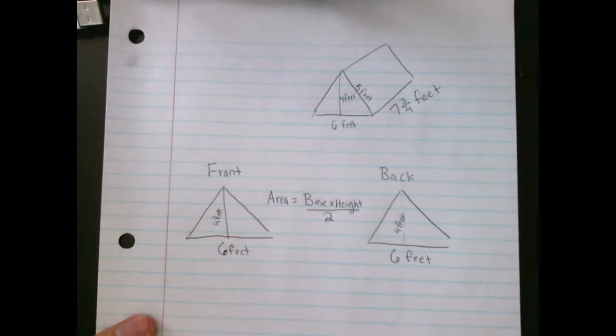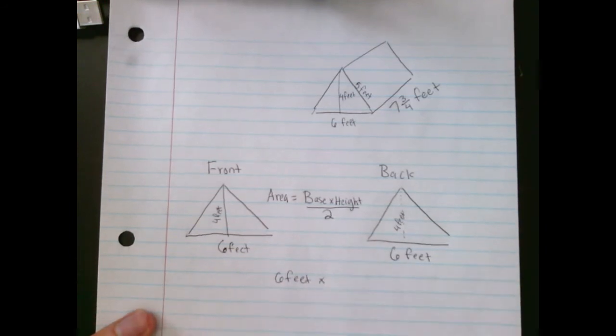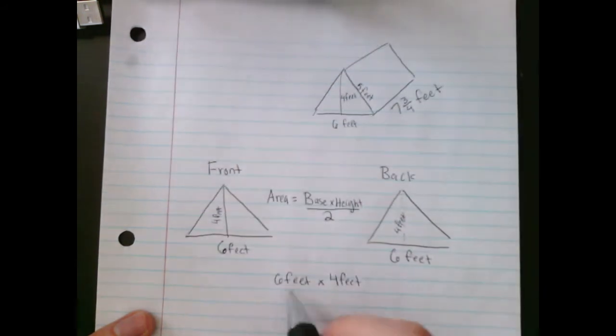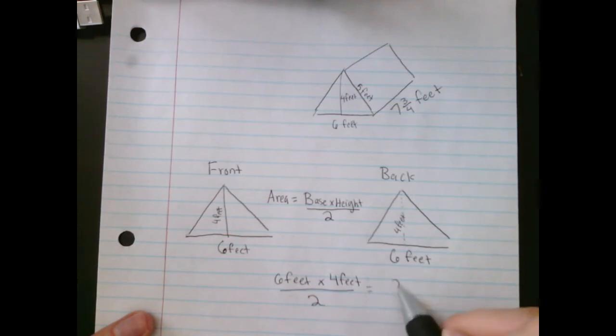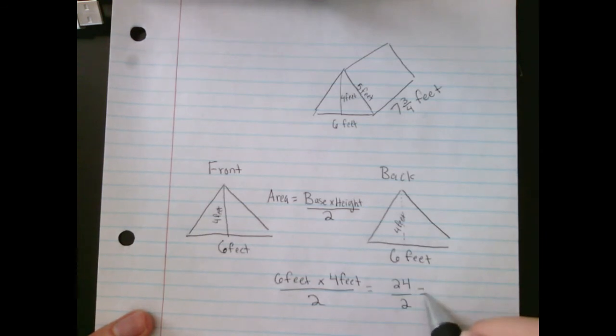So the base is 6 feet. The height is 4 feet. And then you divide that by 2. Okay, so we end up getting 24 divided by 2, which then becomes 12 feet squared.